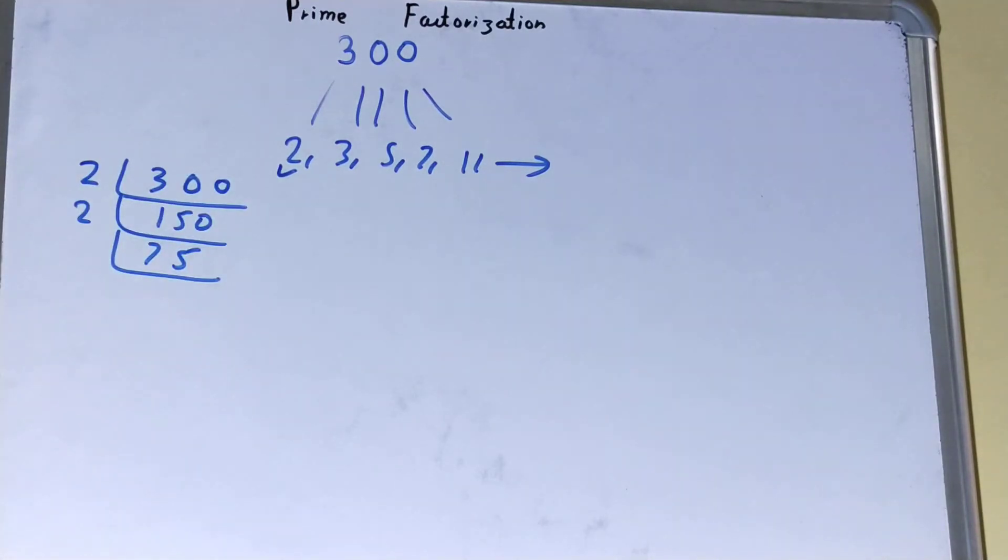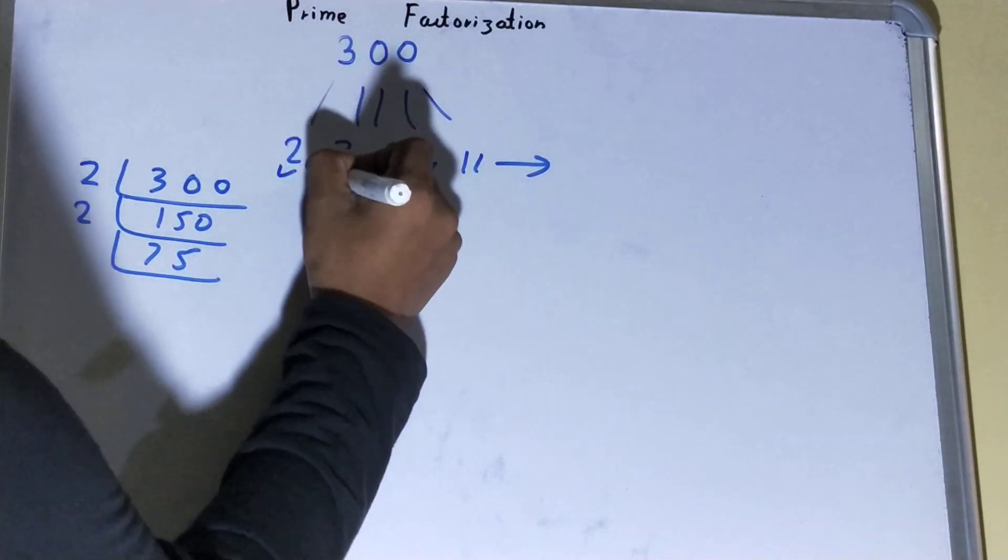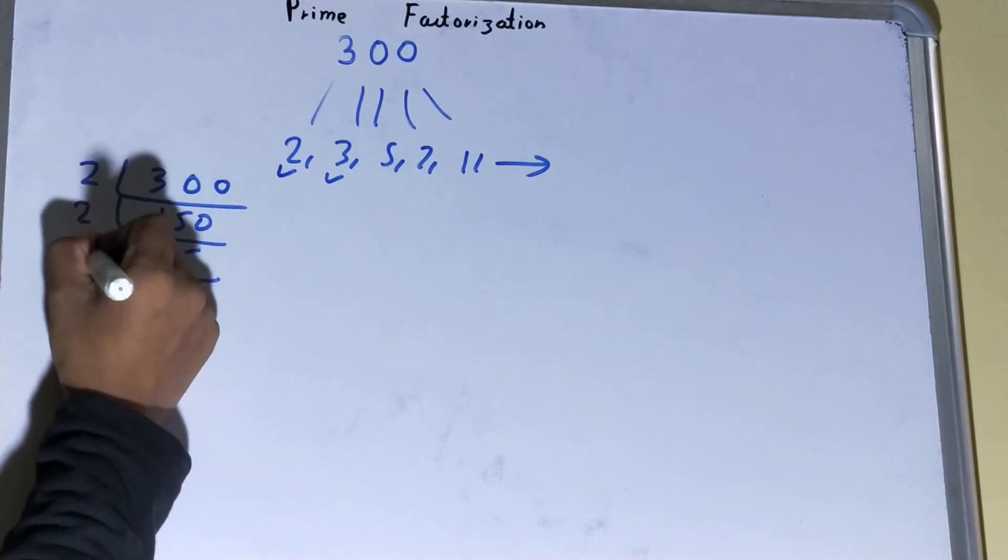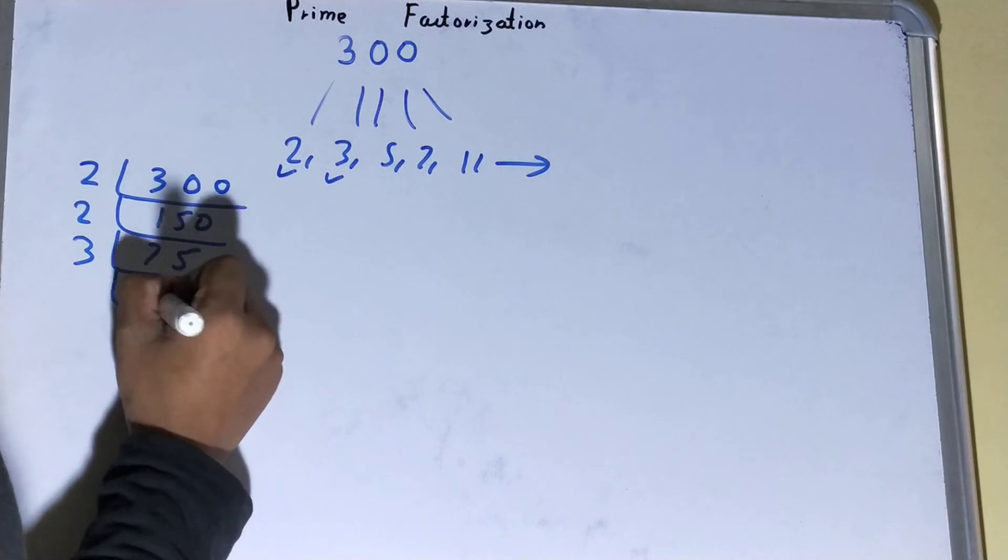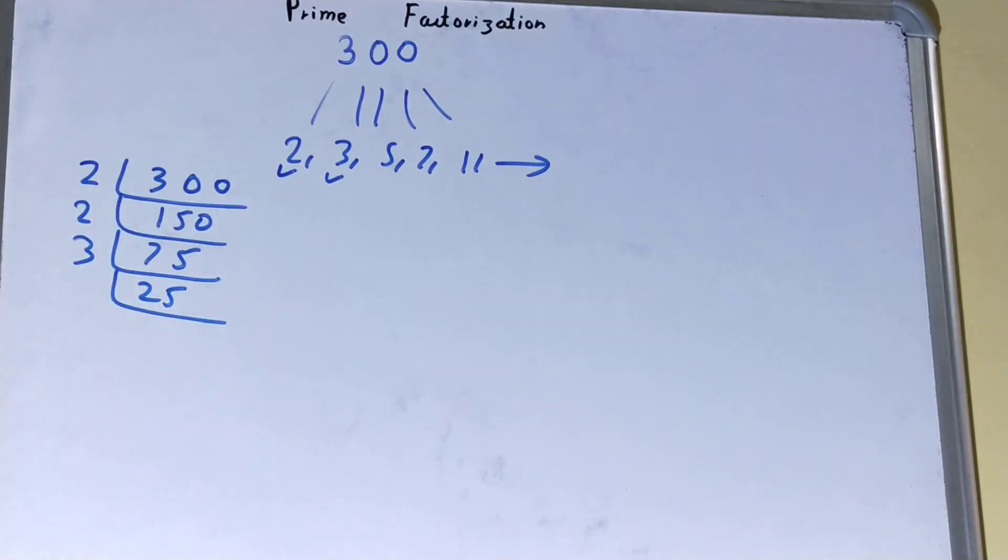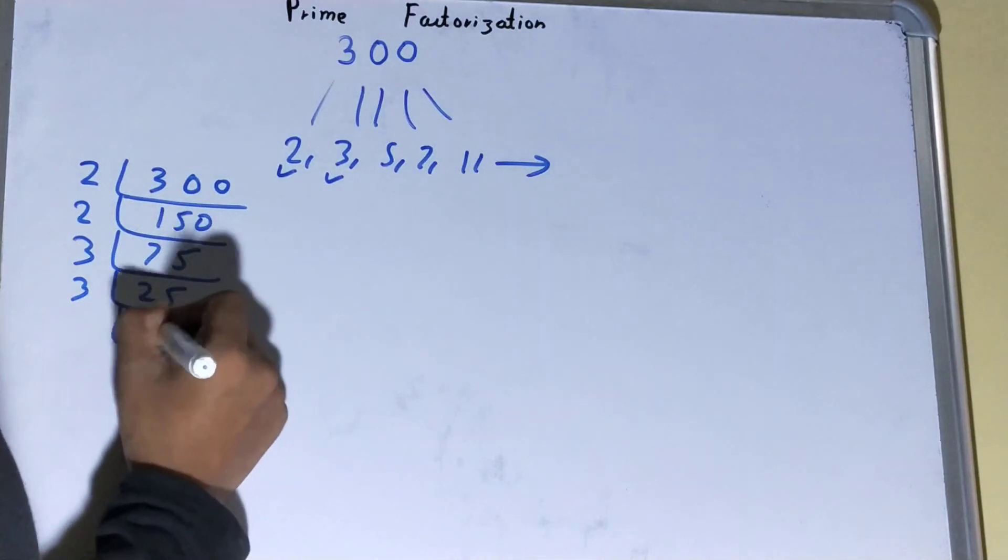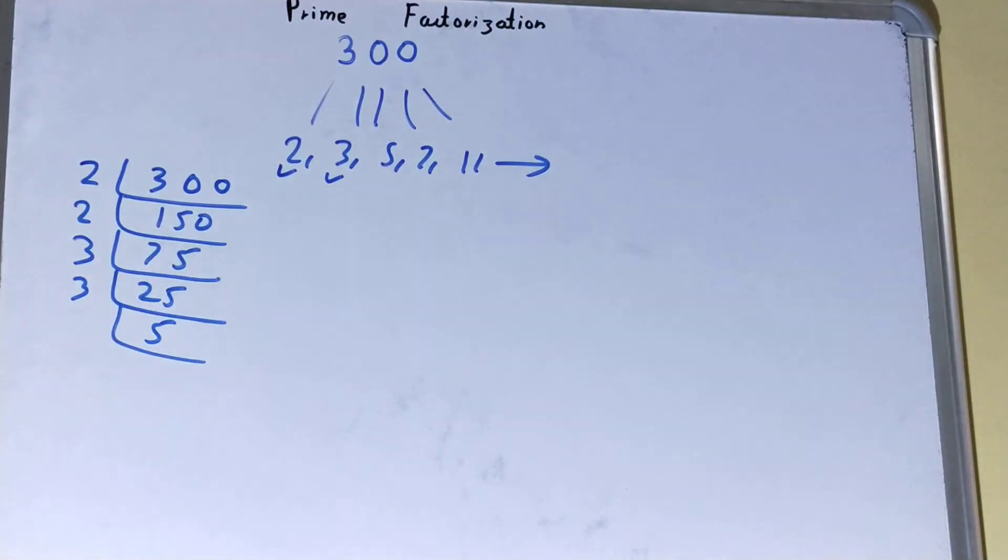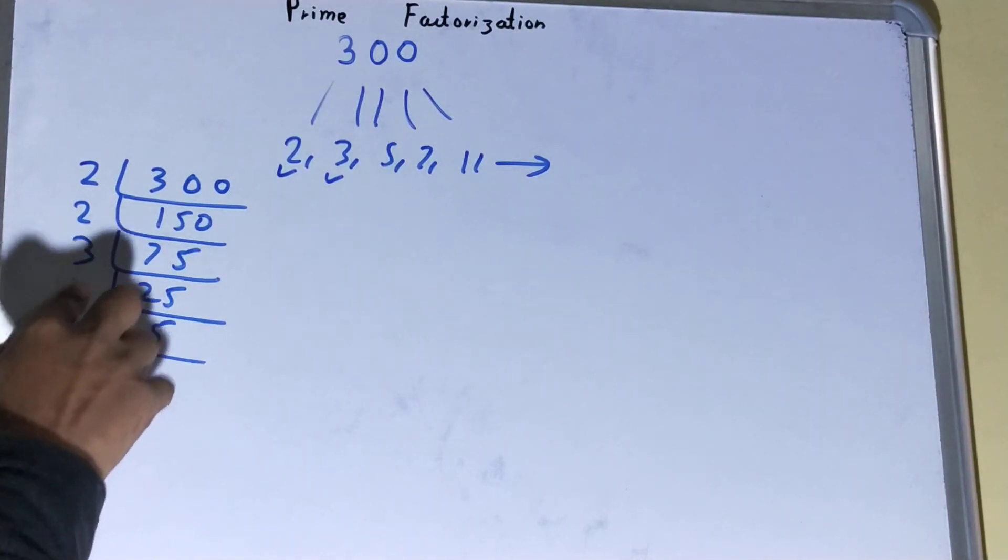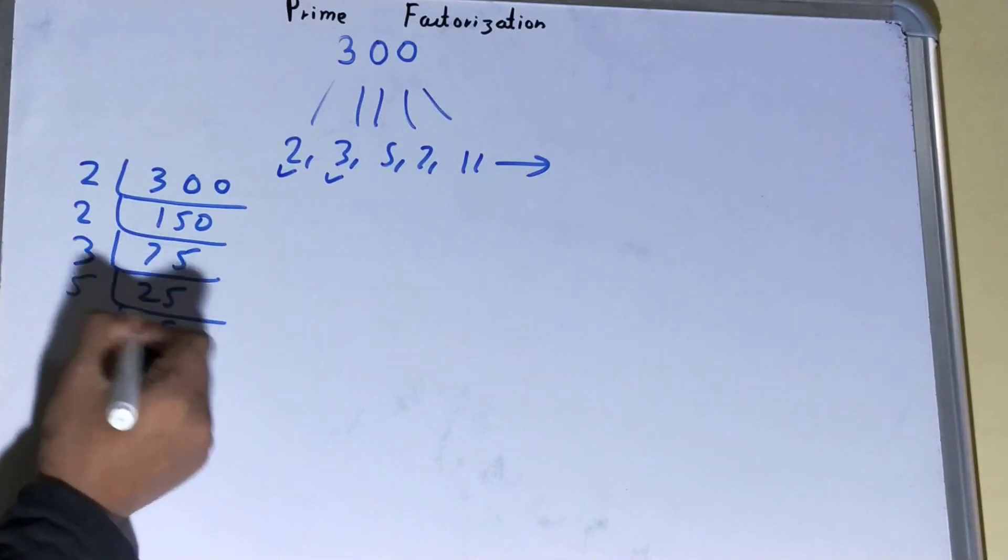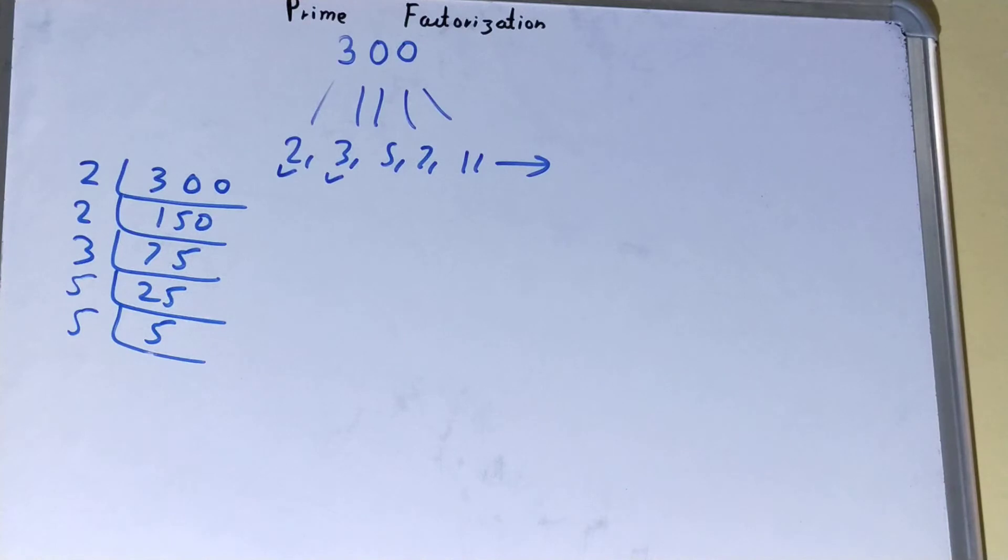Is 75 divisible by 2? No, so we'll go to the next lowest prime number, that is 3. Is it divisible by 3? Yes, we'll divide it, we get 25. Again, is this 25 divisible by 3? Sorry, it is divisible by 5 and we'll be left with 5. Again, this 5 is divisible by 5, and we'll be left with 1.